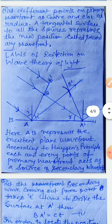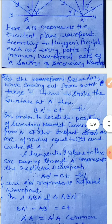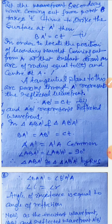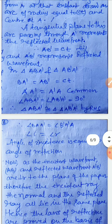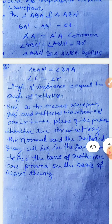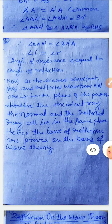In triangles A-B-A' and A-B'-A': B-A' = A-B' = c×t, A-A' is a common side, and angles B and B' are both 90°. Hence the two triangles are congruent by RHS. By CPCT, angle B-A-A' equals angle B'-A'-A, meaning the angle of incidence equals the angle of reflection. This proves the first law of reflection using wave theory. Since the incident and reflected wavefronts are perpendicular to the plane of the paper, the incident ray, the normal, and the reflected ray all lie in the same plane. Hence the laws of reflection are proved on the basis of wave theory.